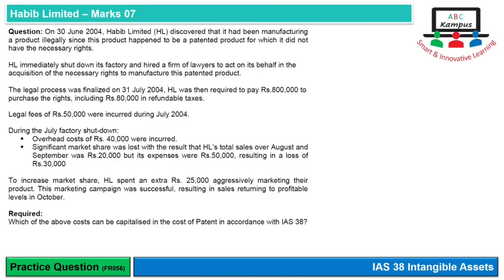Welcome to ABC Campus. Today we will work through an IAS 38 practice question: Habib Limited. On 30th June 2004, Habib Limited discovered it had been manufacturing a product illegally, as it was a patented product for which it did not have the necessary rights. HL immediately shut down its factory and hired lawyers to acquire the necessary manufacturing rights. The legal process was finalized on 31st July 2004, requiring HL to pay Rs. 800,000 to purchase the rights, including Rs. 80,000 in refundable taxes — which will be deducted from cost.